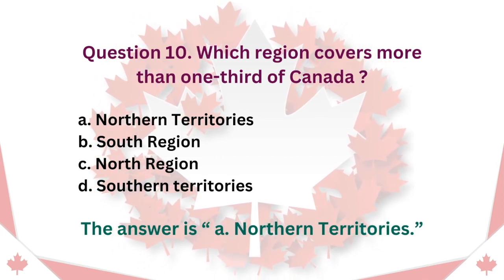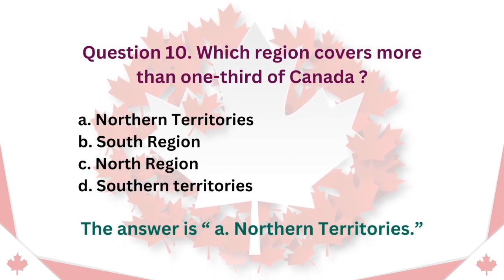Question 10: Which region covers more than one-third of Canada? A. Northern territories. B. South region. C. North region. D. Southern territories. The answer is A. Northern territories.